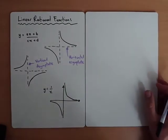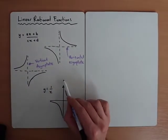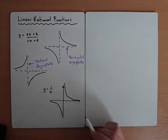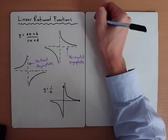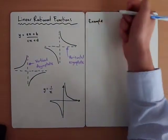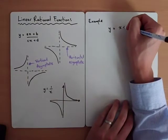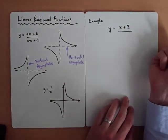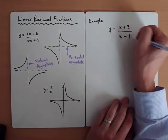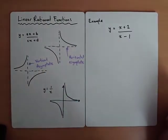So let's first of all think about how we're going to figure out what these asymptotes are. So if I had y equals x plus 2 divided by x minus 1, and we're thinking about what does this graph look like — we know it's going to be a rational function — let's first figure out what the asymptotes would be.